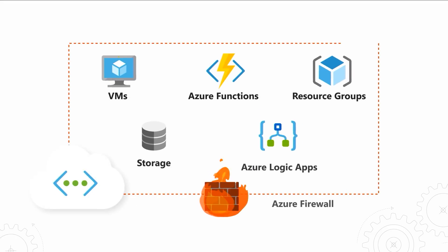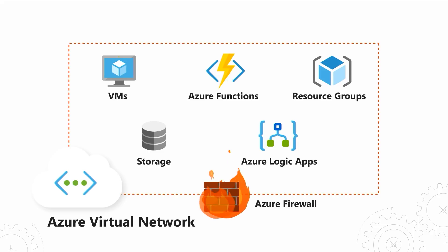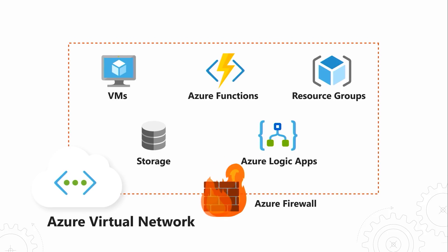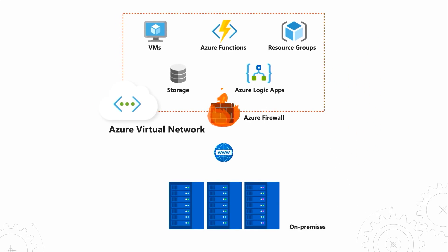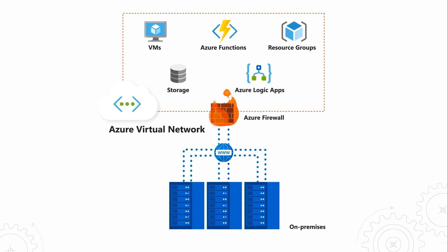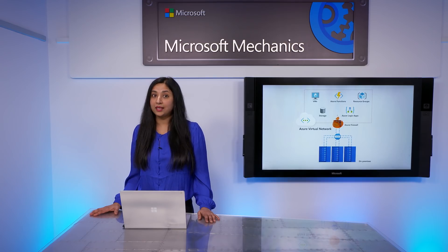The first step to any hybrid configuration between your data center and Azure is setting up network connections. The Azure Virtual Network, or VNet, is your network in the cloud connecting all your cloud resources within a region or between regions. It can also become a bridge for hybrid connectivity to connect your on-premises resources. So let's start with how you can create a virtual network in Azure.